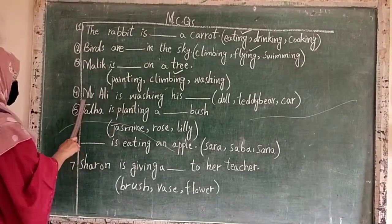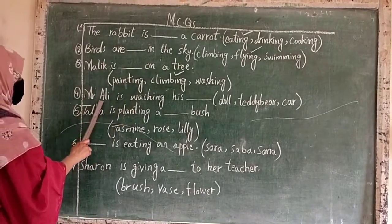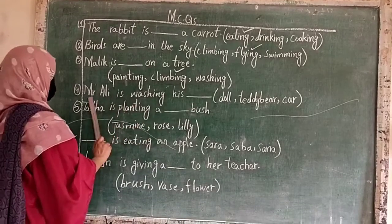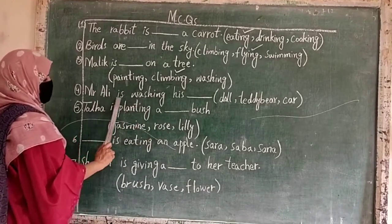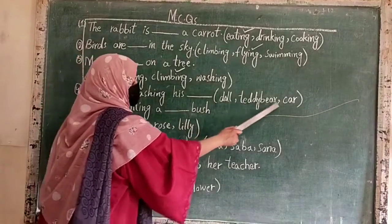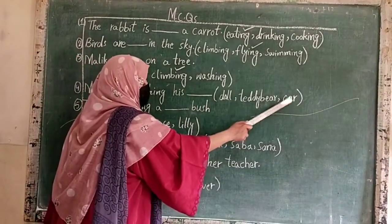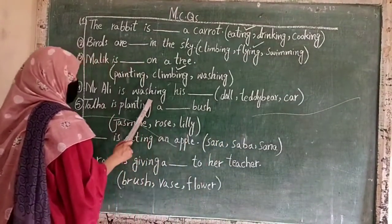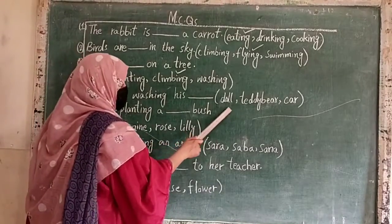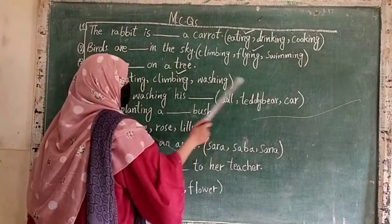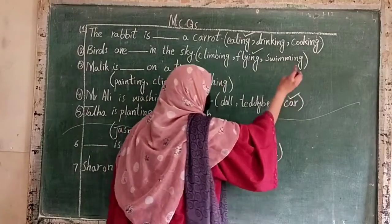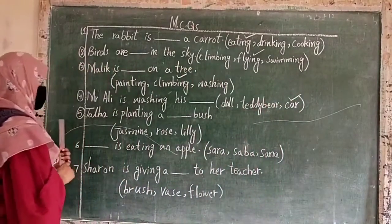Number 4: Mr. Ali is washing his ___. Options are: doll, teddy bear, or car? What is Mr. Ali washing? The answer is car — Mr. Ali is washing his car.